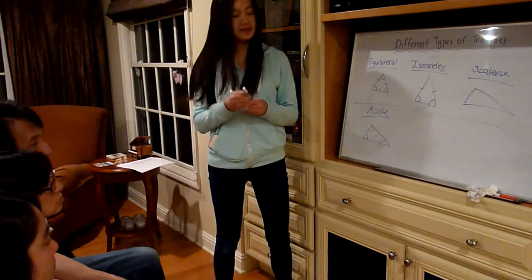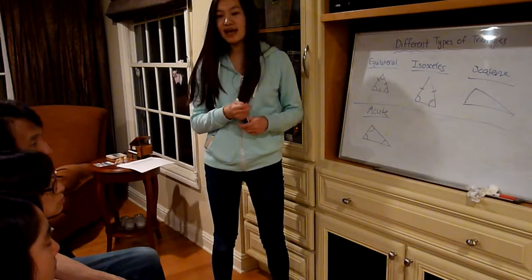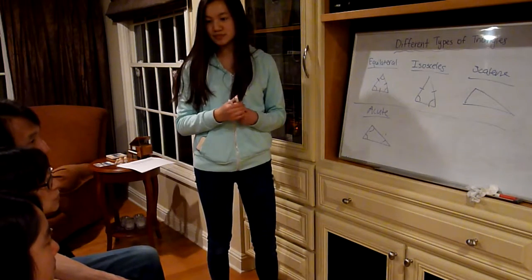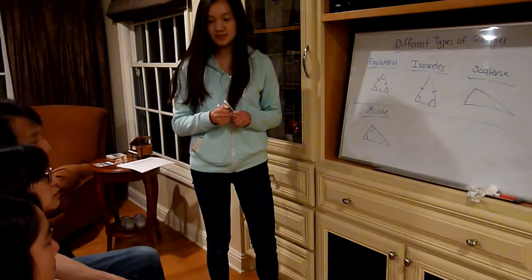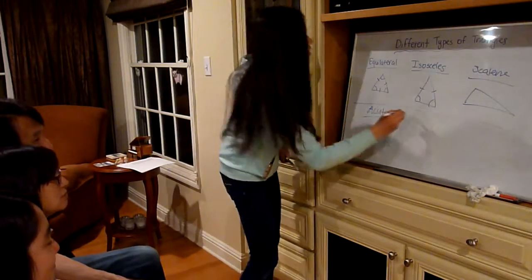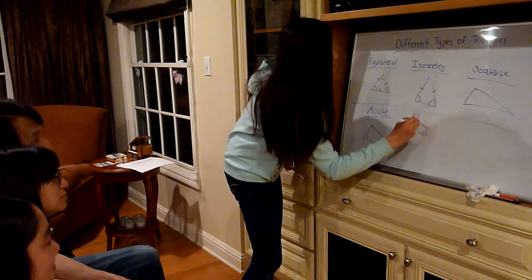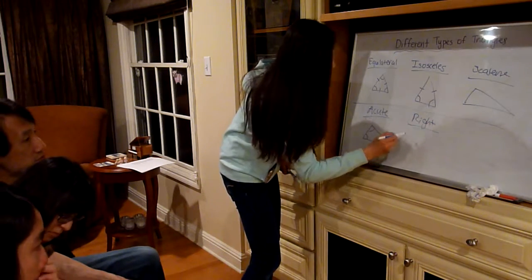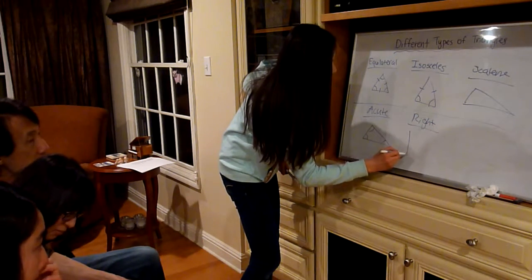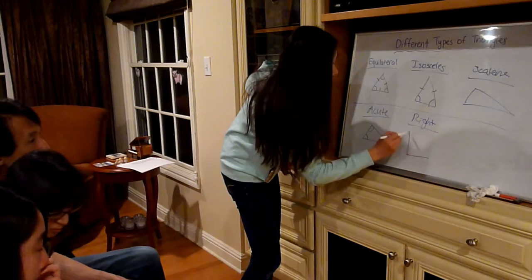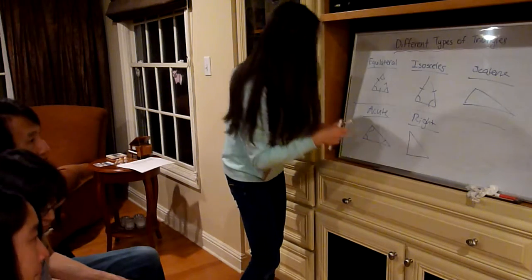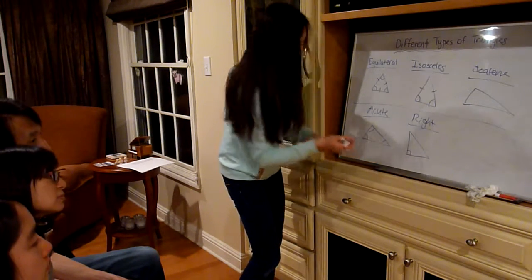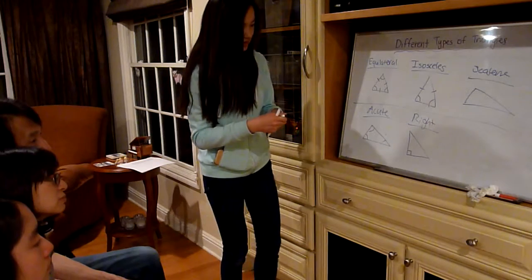Can anyone tell me what you call an angle that is exactly 90 degrees? Right angle — correct. So a right triangle has one angle that is 90 degrees, and we show that with a little square symbol.